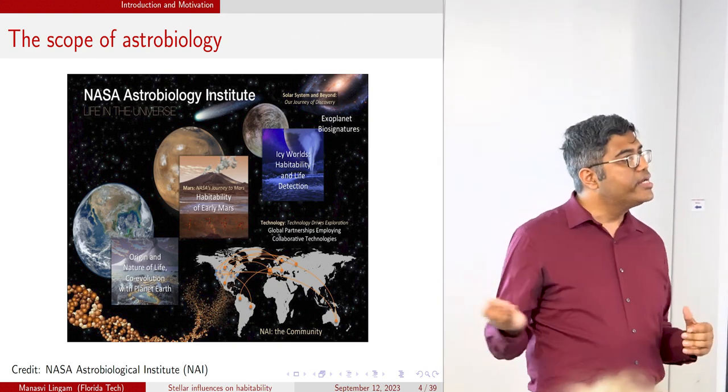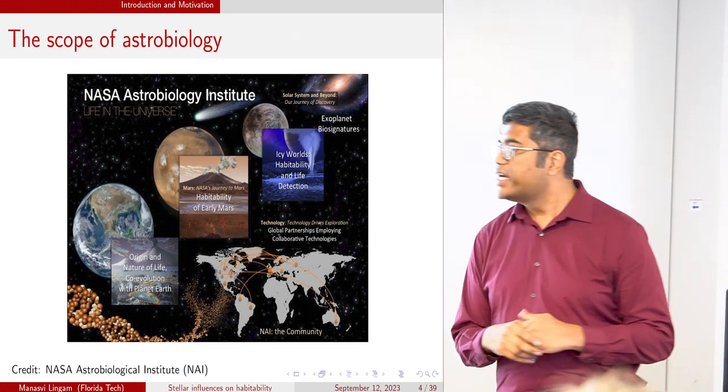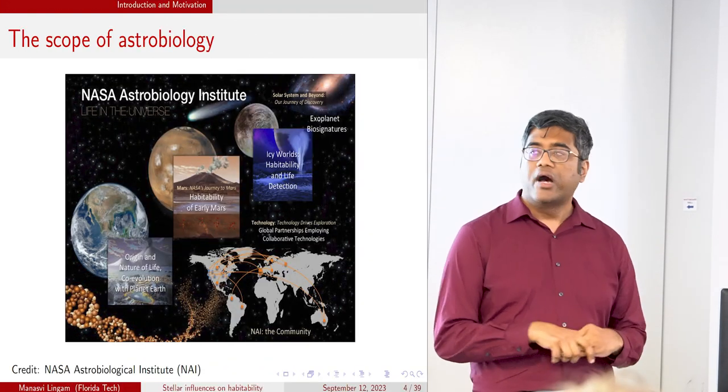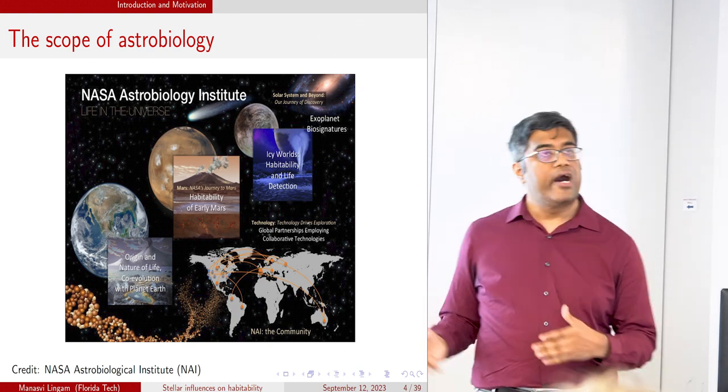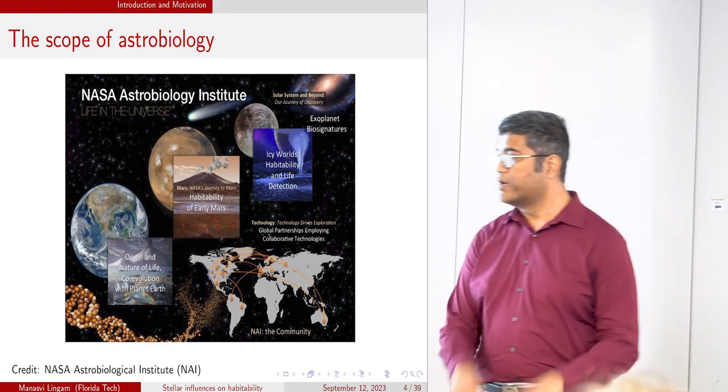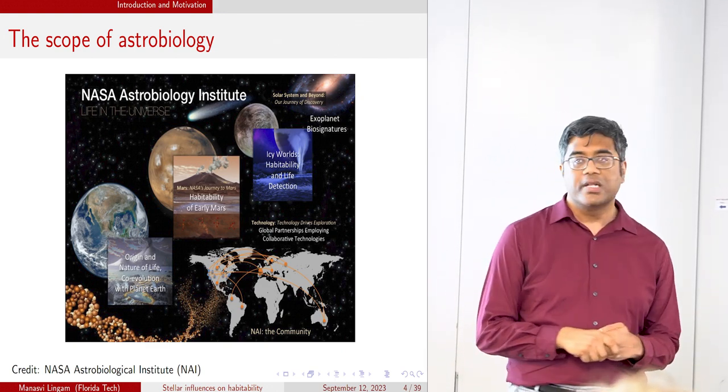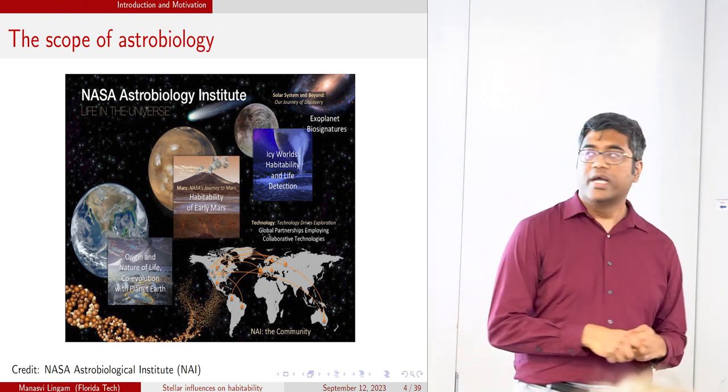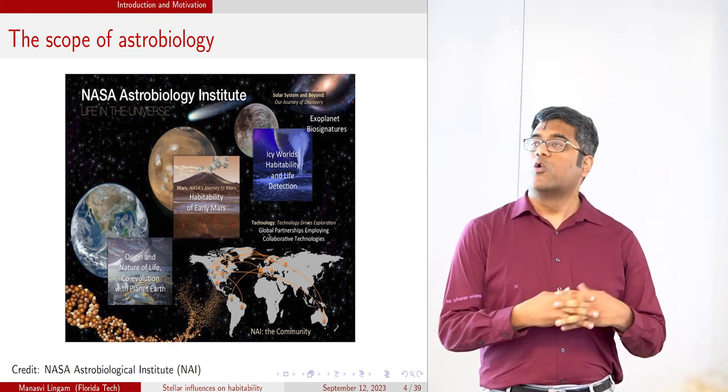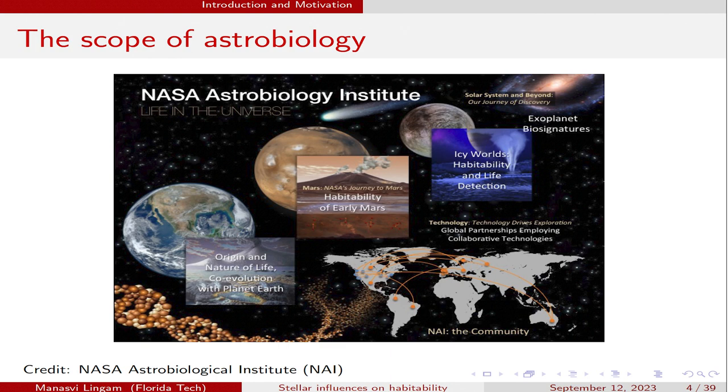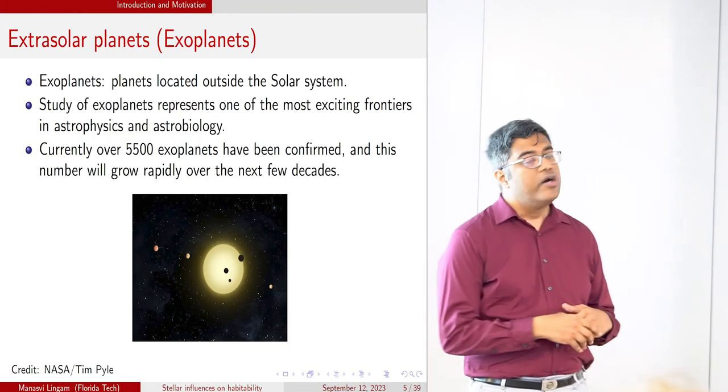As to what is included in the scope of astrobiology, there are many different areas that fall under it. It all begins with home itself, namely planet Earth. One of the things that astrobiology looks at is to try and understand how the origin of life happened on Earth and also how subsequent evolution unfolded. That is because Earth is the only planet that is known to host life. Then there are also notable examples of astrobiological targets in our solar system, such as Mars, and the icy moons which are known to contain oceans underneath their surface, such as Europa and Enceladus. And then finally, going beyond, we have exoplanets.